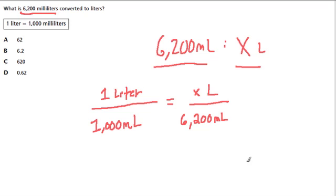And then I look at this proportion here and just look for a comparison that I can use. One that I could use is, if I take 1,000 and multiply it by 6.2, I get 6,200.